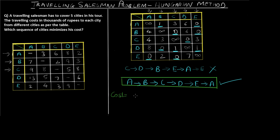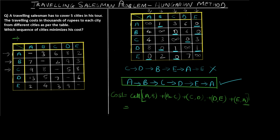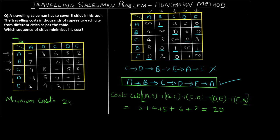To calculate the total cost, we look up the actual values from the original table. Cost = cell(A,B) + cell(B,C) + cell(C,D) + cell(D,E) + cell(E,A) = 3 + 4 + 5 + 6 + 2 = 20. So the minimum cost is 20,000 rupees.